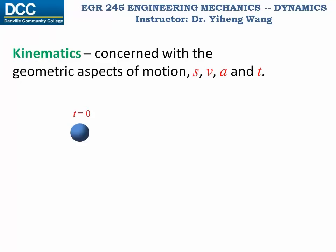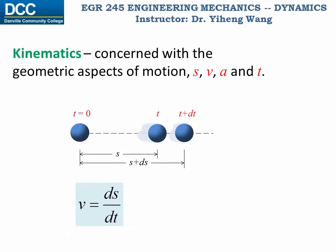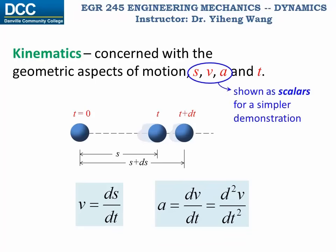As you probably learned in physics, displacement is the change in position of the object as time changes, and velocity is the time derivative of displacement, and the acceleration is the time derivative of velocity. I need to point out that displacement, velocity, and acceleration are all vectors, but here they are shown as scalars for simplification reasons.